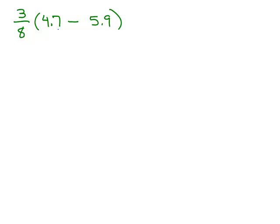Notice I have 4.7 minus 5.9, that's going to give me a negative number. I'm going to rewrite this as plus a negative. So I'm adding a positive and a negative number and there are more negatives so my answer is going to be negative.